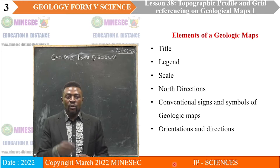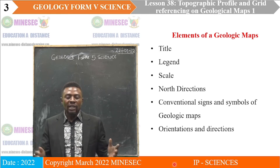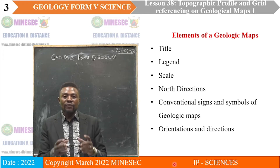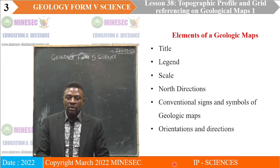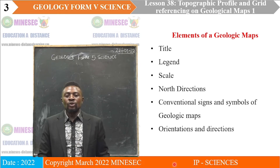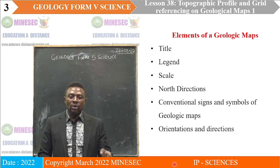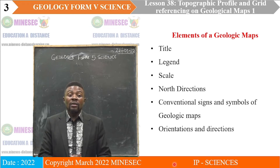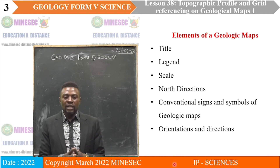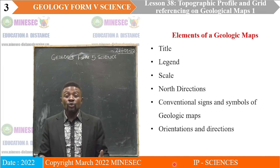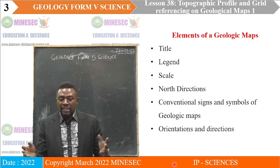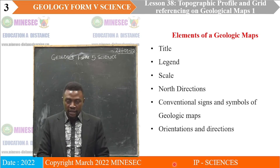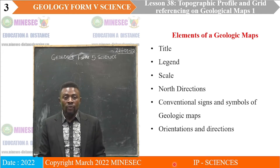We have the north direction, which is a reference point in the map for locating any other feature. We also talked about conventional signs and symbols, which are the universal signs used to represent the different types of rocks and structures in a geologic map — the symbols for sedimentary rocks, metamorphic rocks, igneous rocks, and also the dip, strike, plunge, and trend signs. We have the orientation and direction, which we use to get cardinal location — cardinal directions that can be 4, 8, or 16 cardinal points.